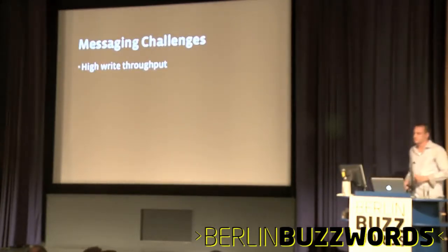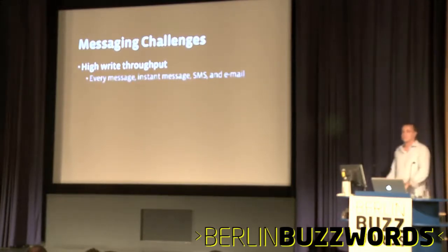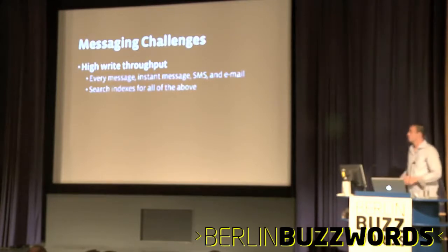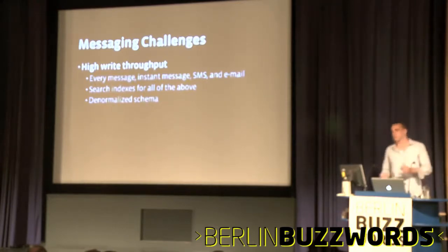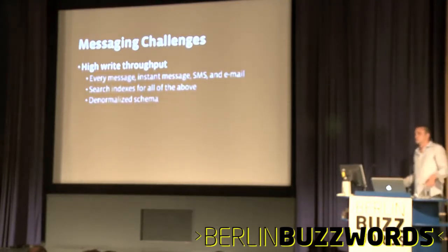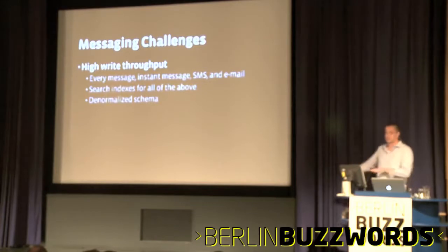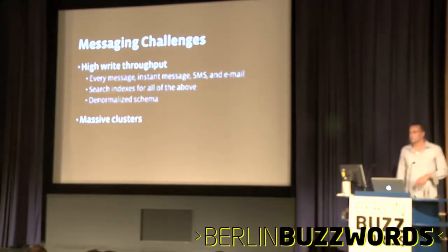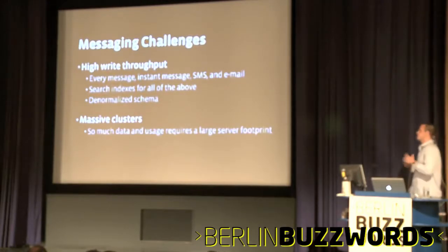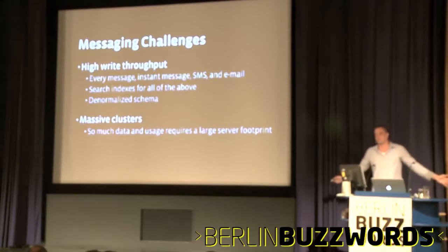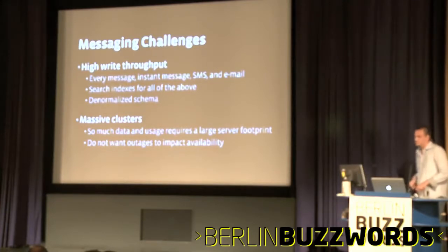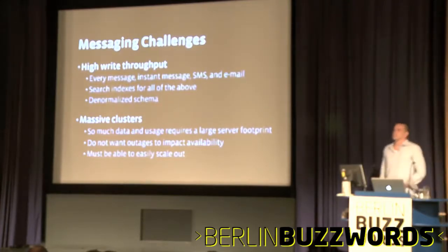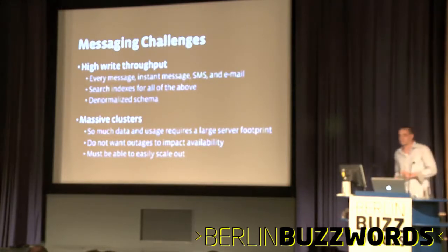So, high write throughput — every message, every instant message, every SMS, and every email needs to be persisted. We need to build search indexes per user on all of that. One of the requirements from the product team was a denormalized schema, which meant if I'm in a conversation with five people and I send a message, there are five copies being stored in each person's inbox. Lots of writes. Also really big clusters because of all these writes and so much data and usage. And we don't want outages to impact availability — we need to be able to easily scale out.